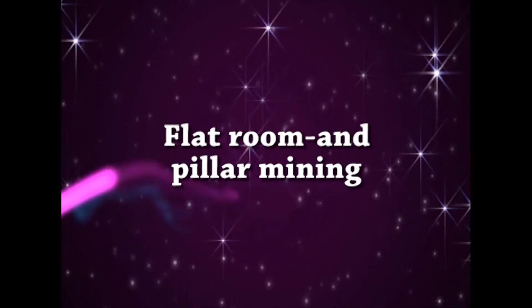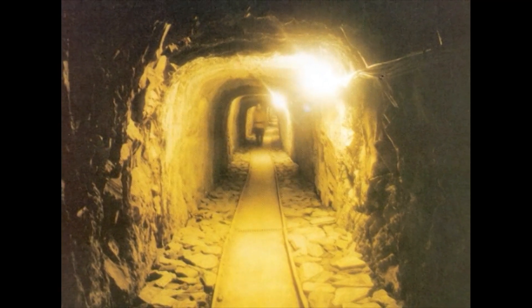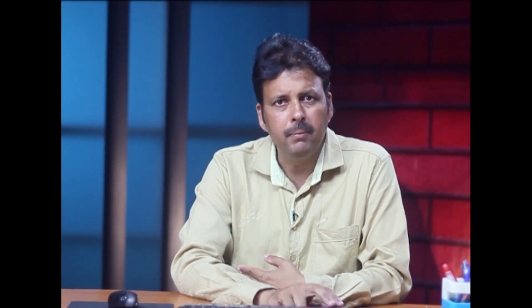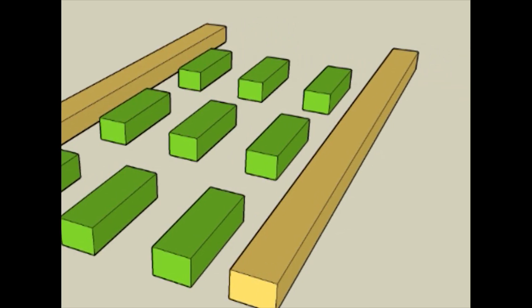Room and pillar mining is applicable to tabular mineralization with horizontal to moderate dip at an angle not exceeding 20 degrees. The deposits are often of sedimentary origin, and the rock in both hanging wall and mineralization is often incompetent. Room and pillar is one of the principal underground coal mining methods and is an efficient mining method. Safety depends on the height of the open rooms and ground control standards; the main risks are accidents caused by falling rock and moving equipment.